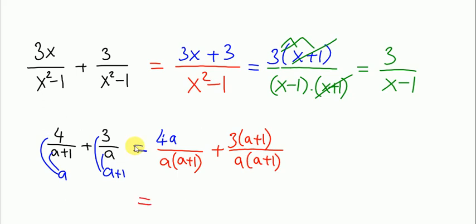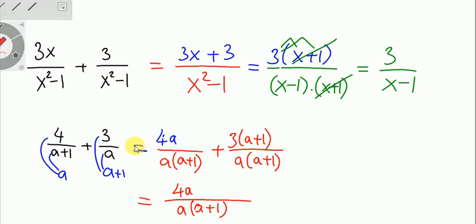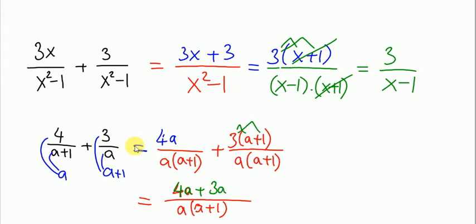So we write everything over the same denominator a times (a plus 1). The numerator will be 4a — from multiplying 4 by a — plus 4, and then distributing 3 inside the parentheses gives 3 times a equals 3a, plus 3 times 1 equals 3.